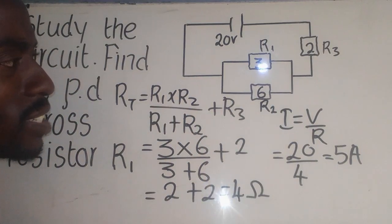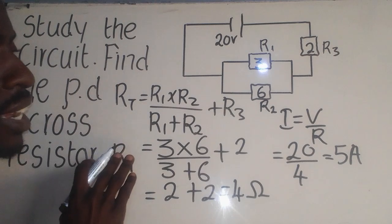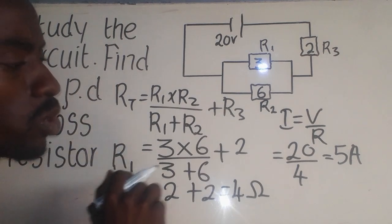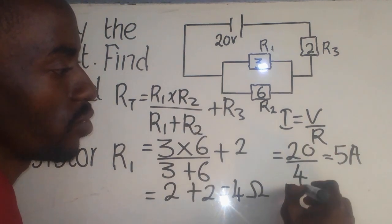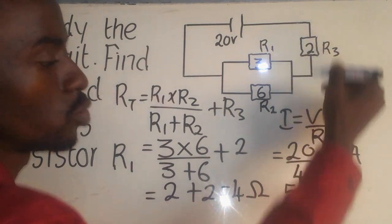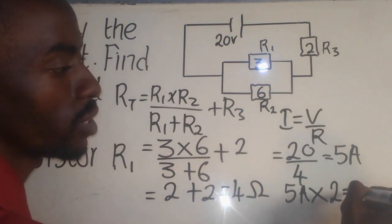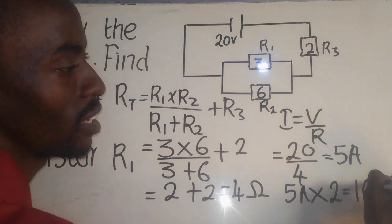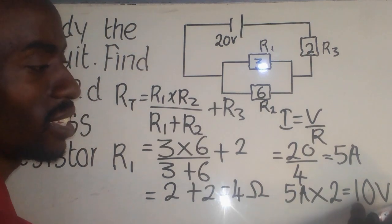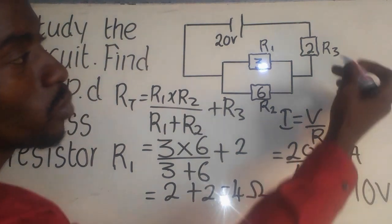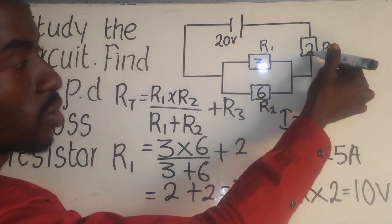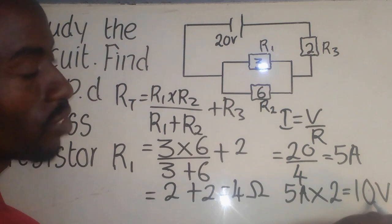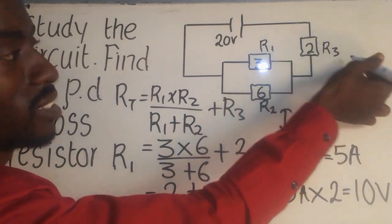But our interest is to find the voltage. Now, how can we find the voltage? For us to find the voltage, we need to get this one here. So, it is now 5A, which is the current, multiplied with the 2. So, when we multiply with the 2, it is going to give me 10 volts. This 10 volts, it is the one which is for this one. This 2, it is the resistor for this one here. So, this 10, it is the voltage for R3, resistor 3 there.